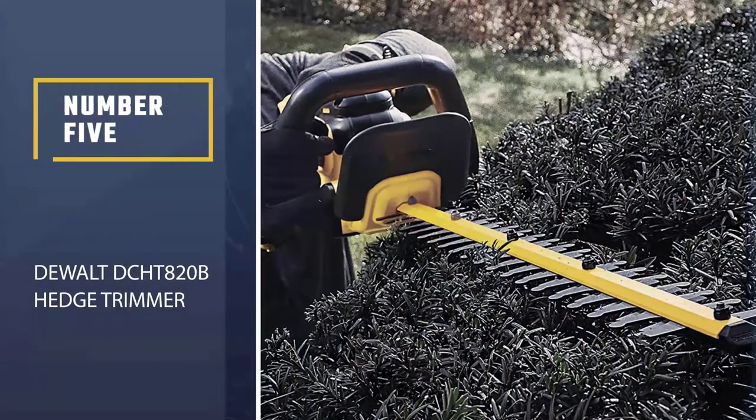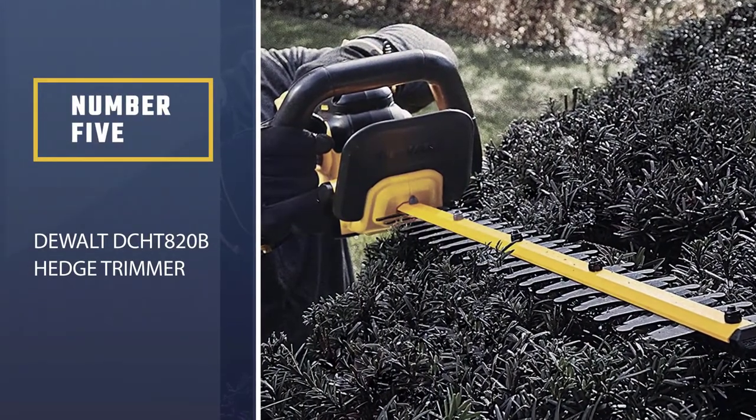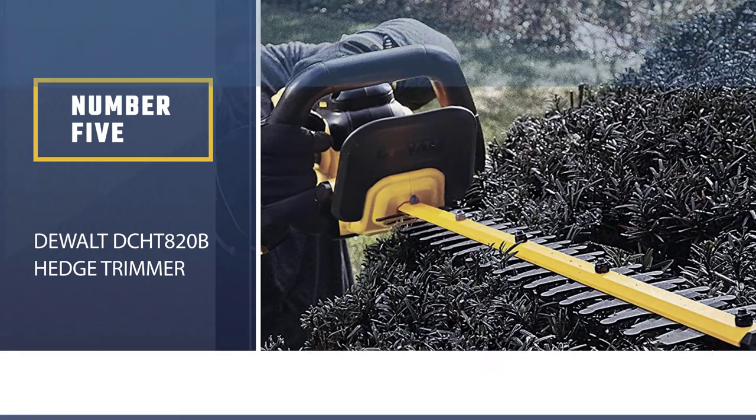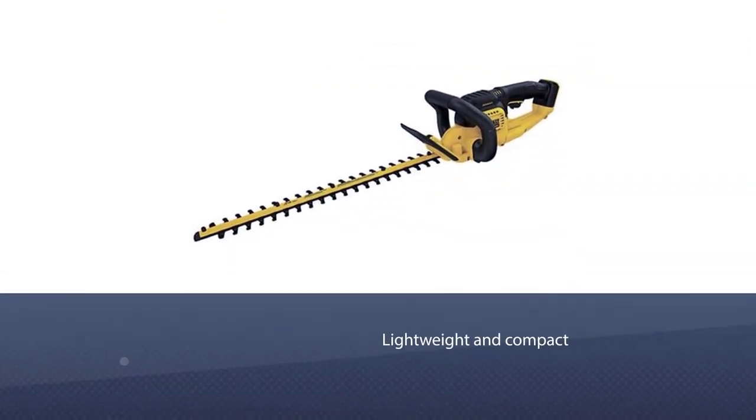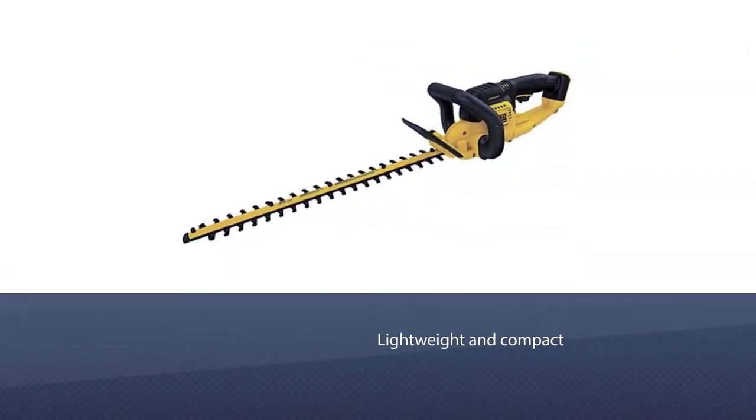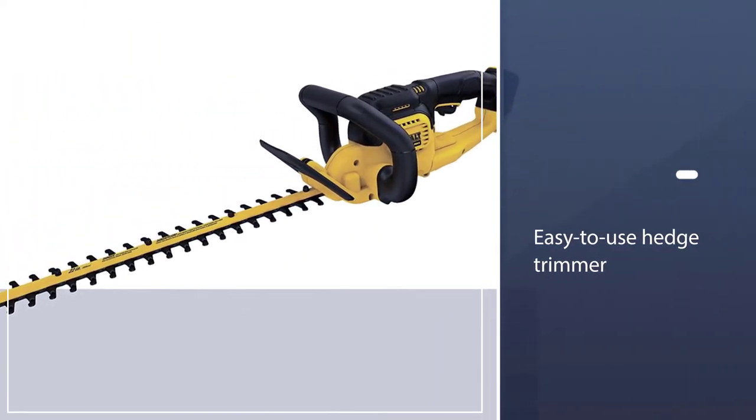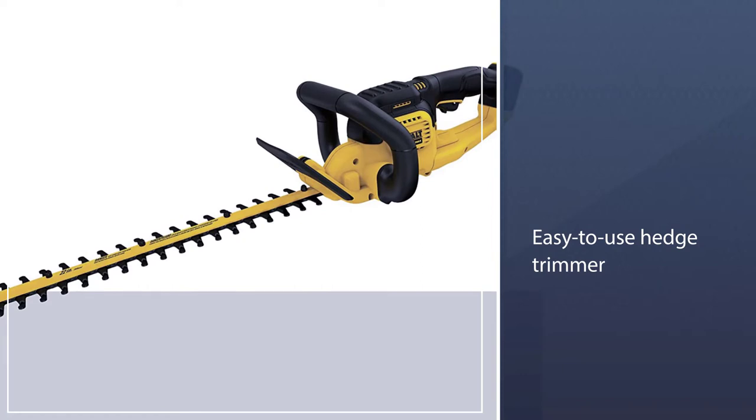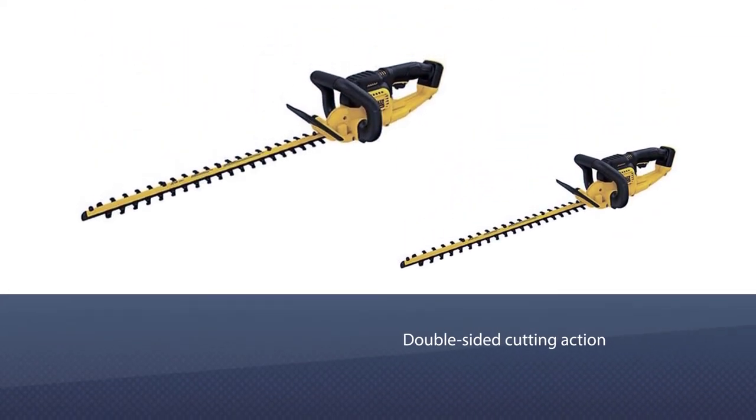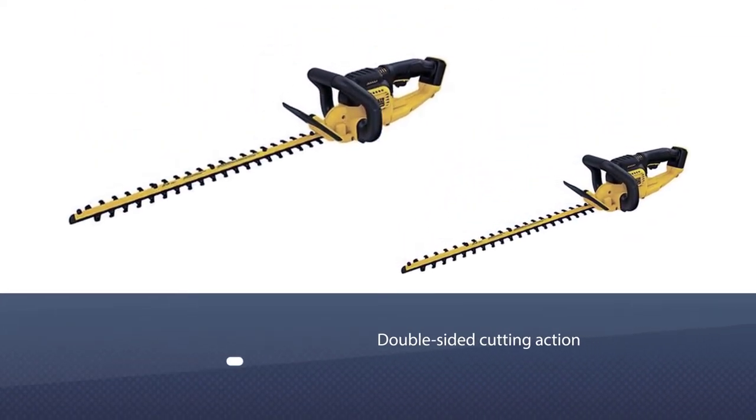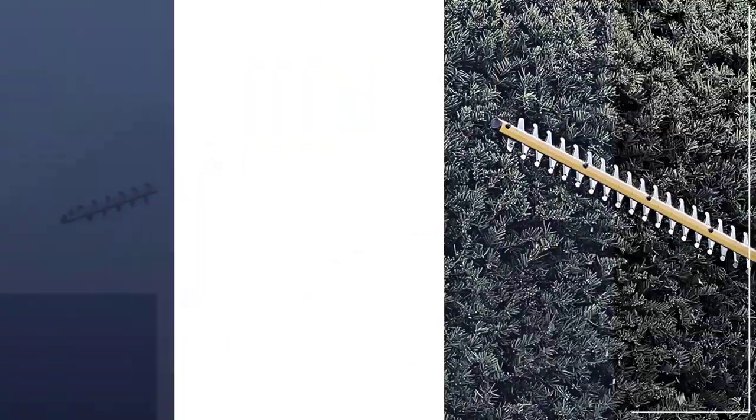Number five: DeWalt DCHT820B hedge trimmer. Lightweight and compact, this easy-to-use hedge trimmer can slice through everything from unruly hedges to thick brambles. With double-sided cutting action, the hook tooth blades can tackle a variety of vegetation on your property, and its durable battery gives you the power and runtime you need to get the job done quickly.